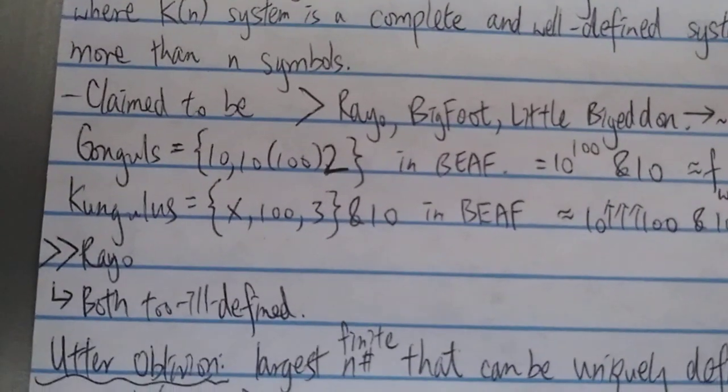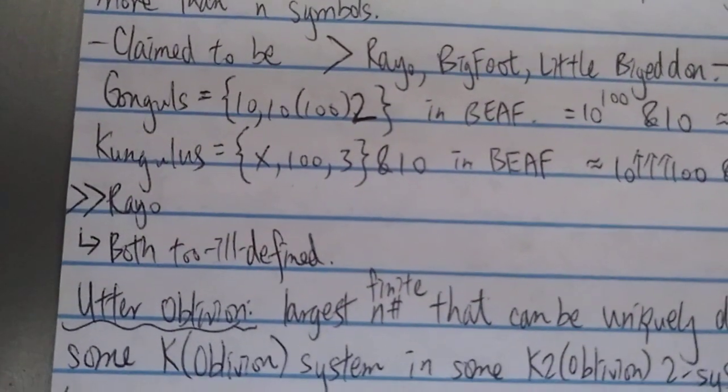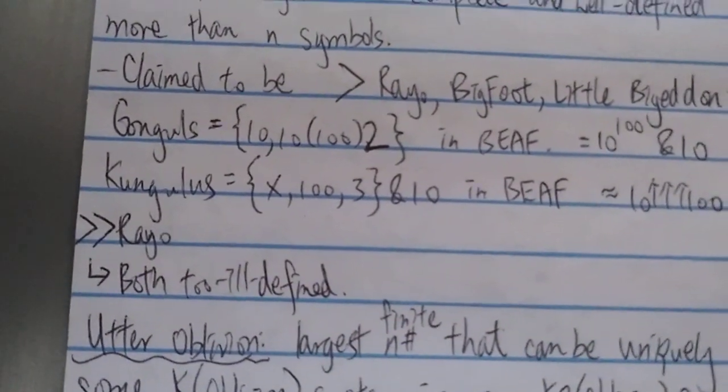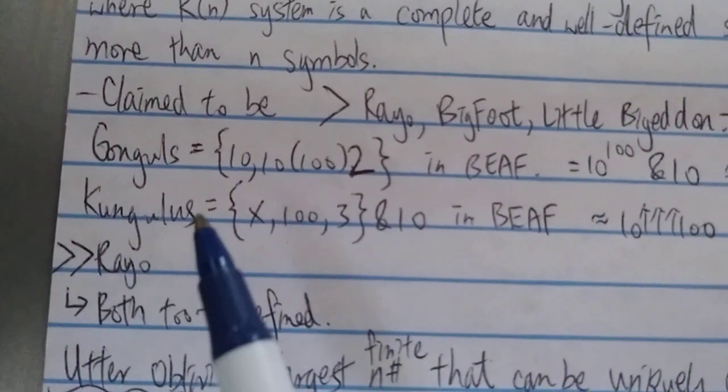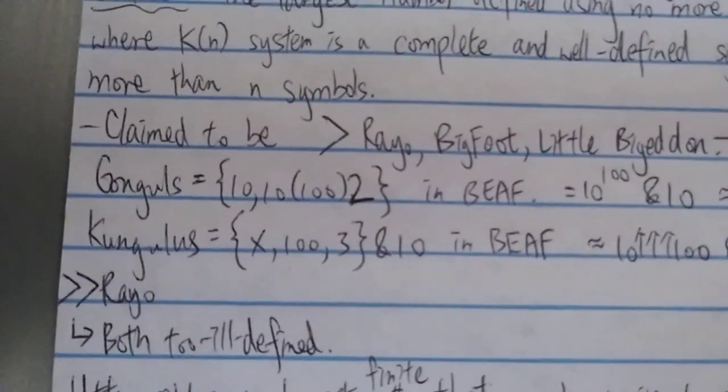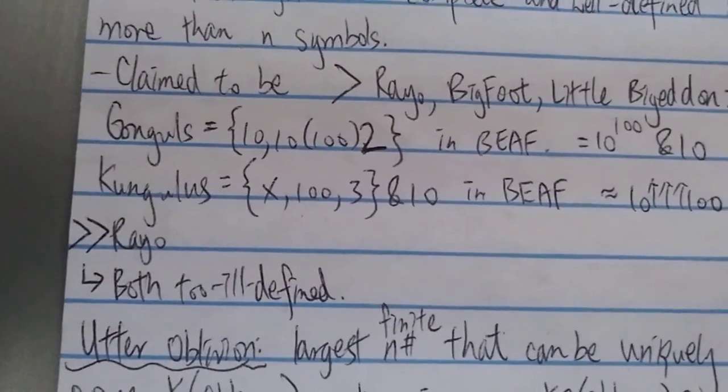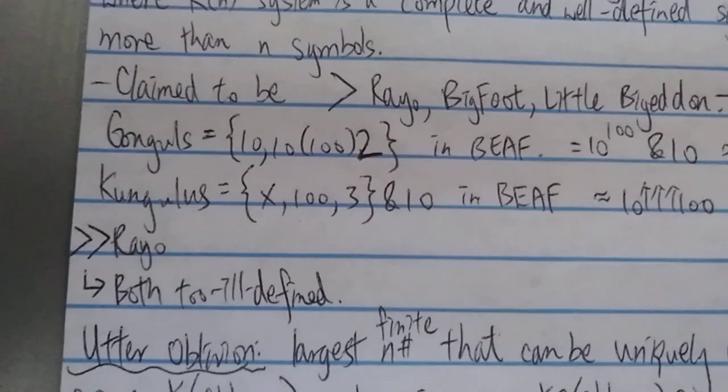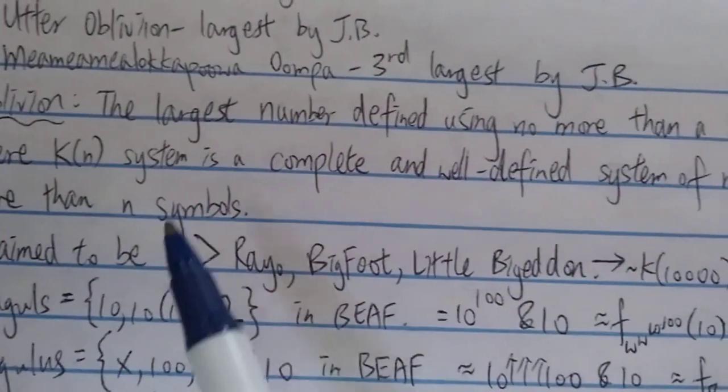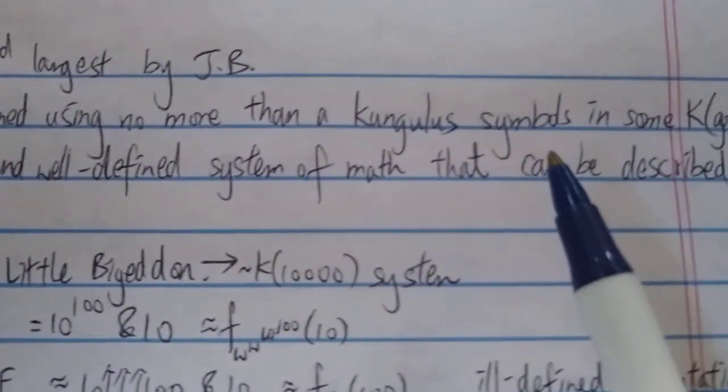But let's say if it's well-defined, you can already tell it's already way, way, way bigger than Rayo's number, because both of these numbers is way, way, way bigger than googol, not even close. And Rayo's number kind of uses googol symbols to define it.